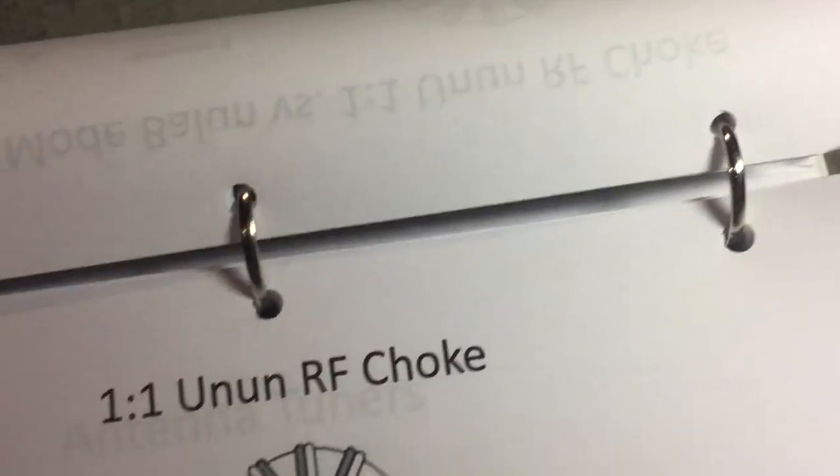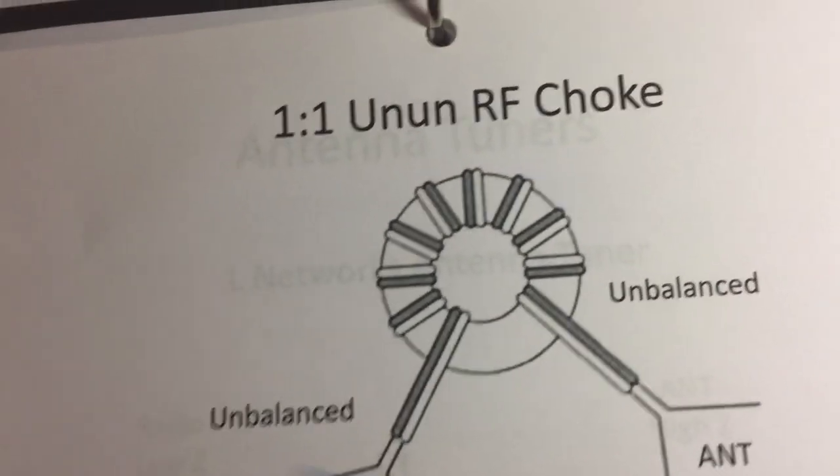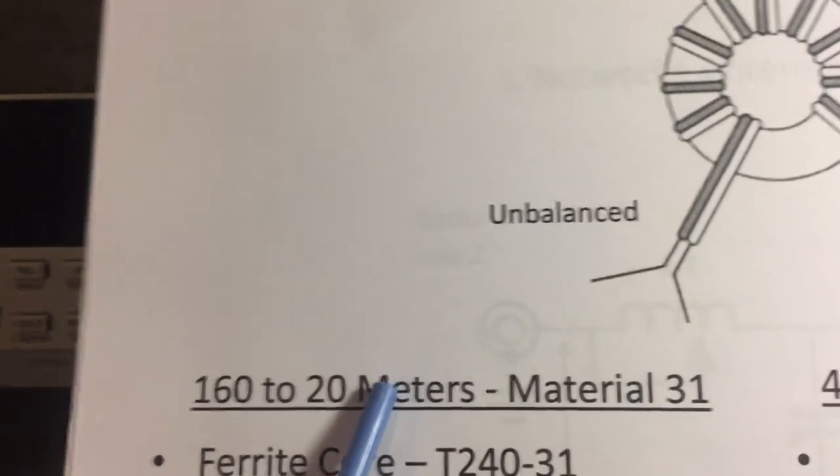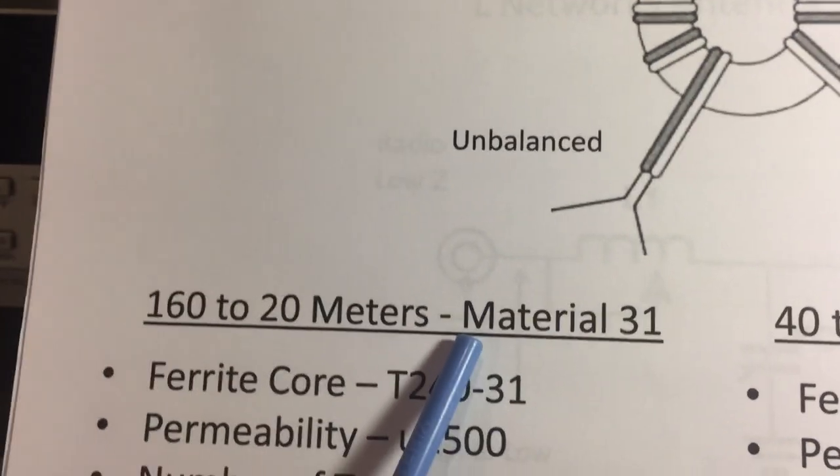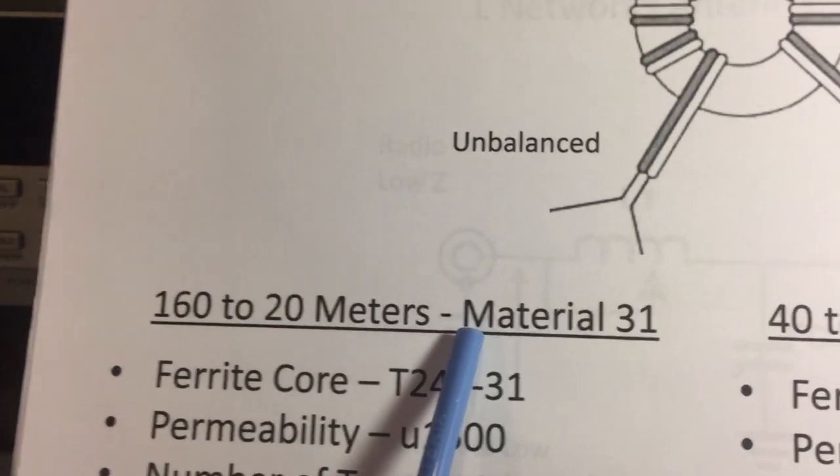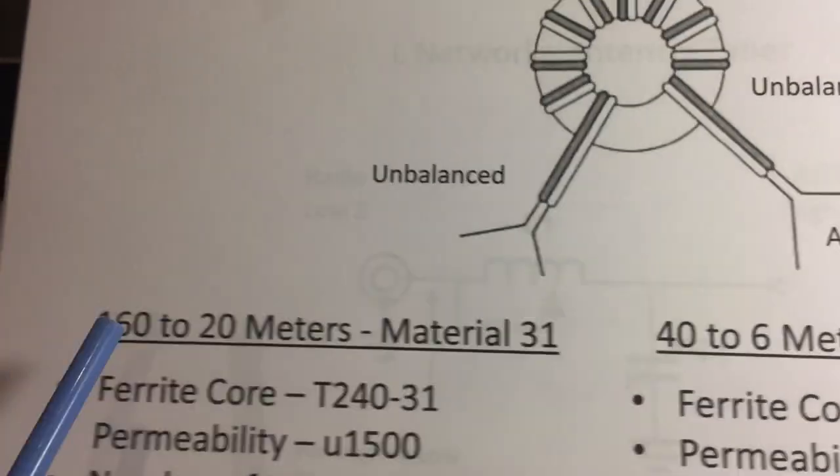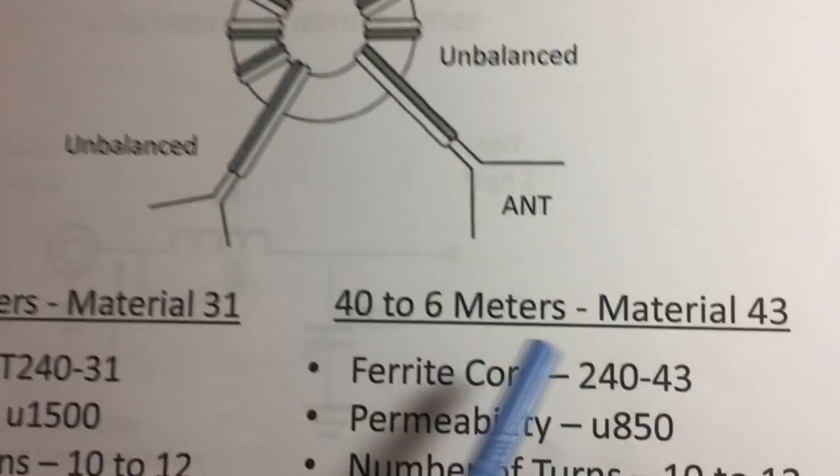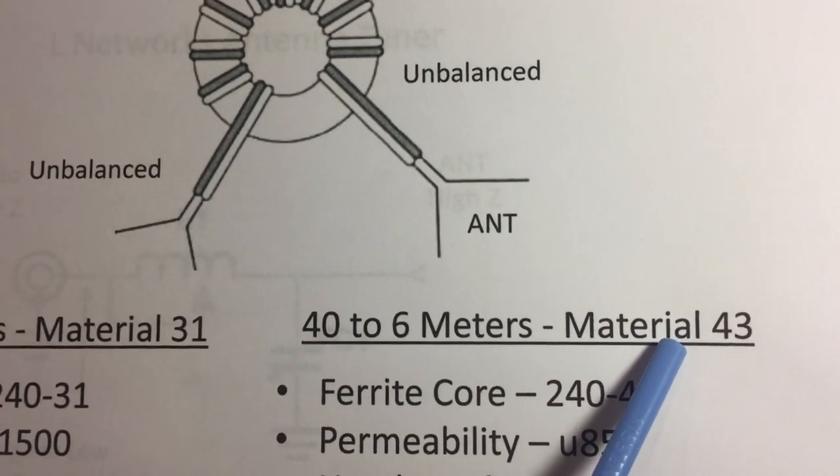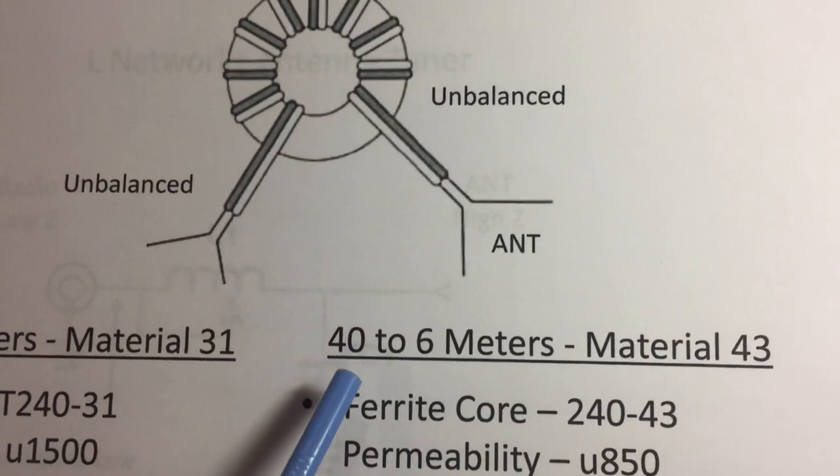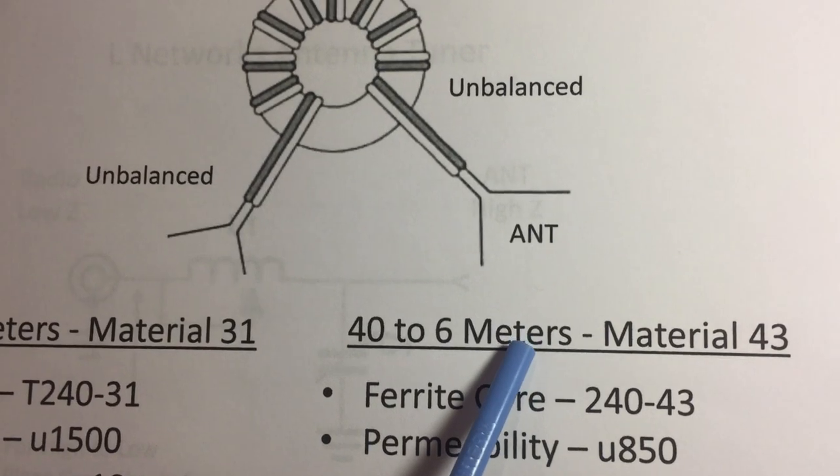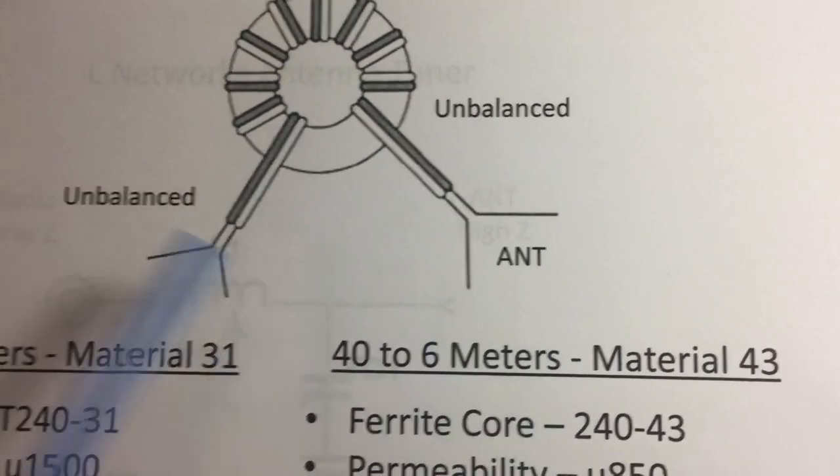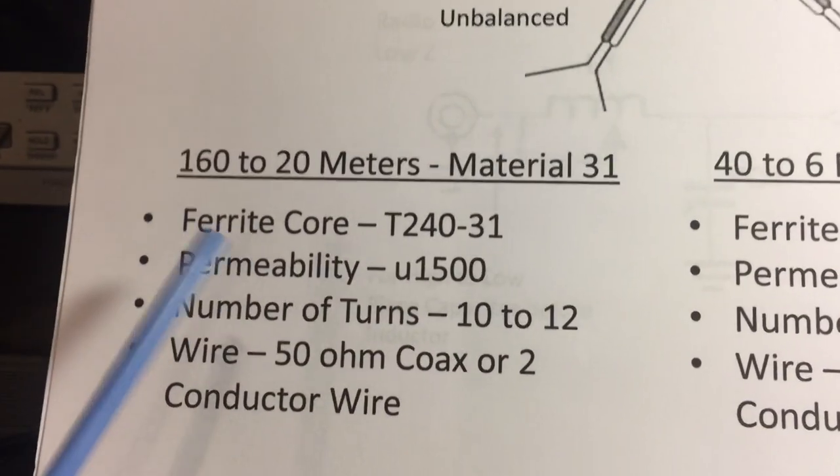Here's the one-to-one un-un I'm using as my choke, unbalanced to unbalanced. There are different ferrite materials that can be used. Many manufacturers offer material 31 which is good for 160 to 20 meters, and material 43 which is good from 40 meters up to six meters, getting into the lower VHF band around 50 megahertz.